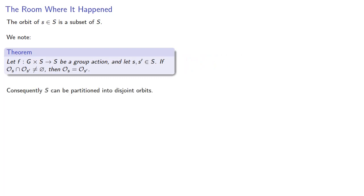Consequently, our set S can be partitioned into distinct orbits. But since S is not a set, there's not a lot we can do with this partition, at least not yet. Let's build up a few more ideas in abstract algebra.